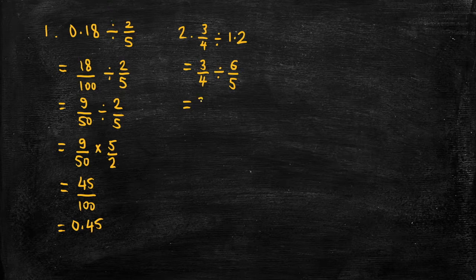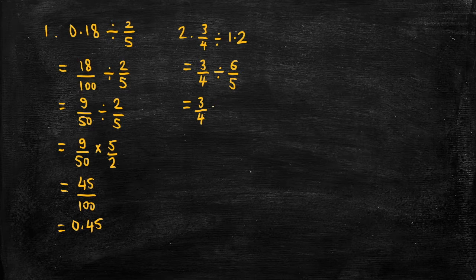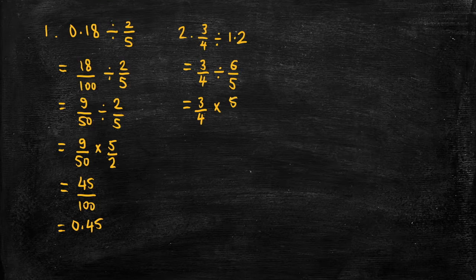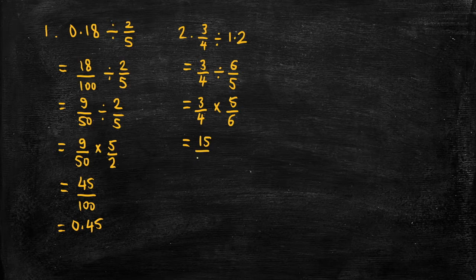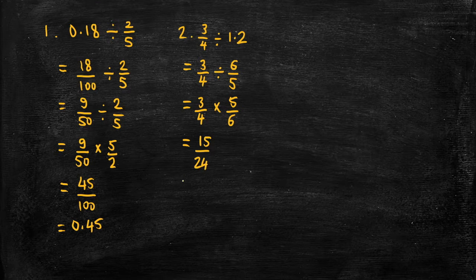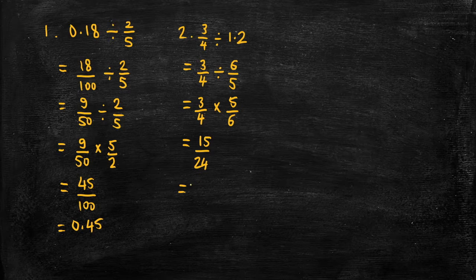Then I'll do keep change flip. And then I'll multiply the numerators and multiply the denominators and then I'll simplify that because there is a common factor of 3.